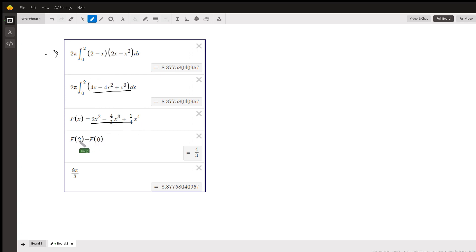So evaluated, big F of 2 minus F of 0 is 4 thirds. And if we multiply that by 2π, we get 8π over 3, which has the same decimal approximation. So that's your exact answer right there.